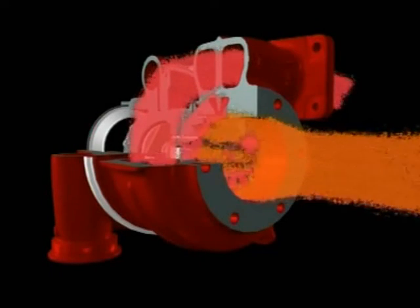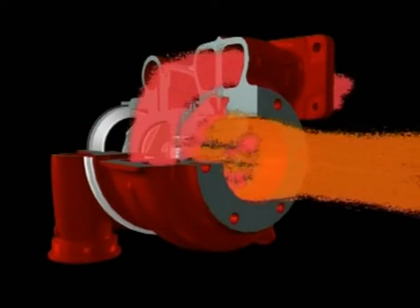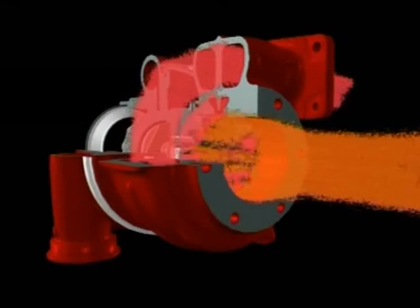Exhaust gas temperatures are up to 760 degrees Celsius, which means that high resistance materials are needed in the turbine wheel and housings.